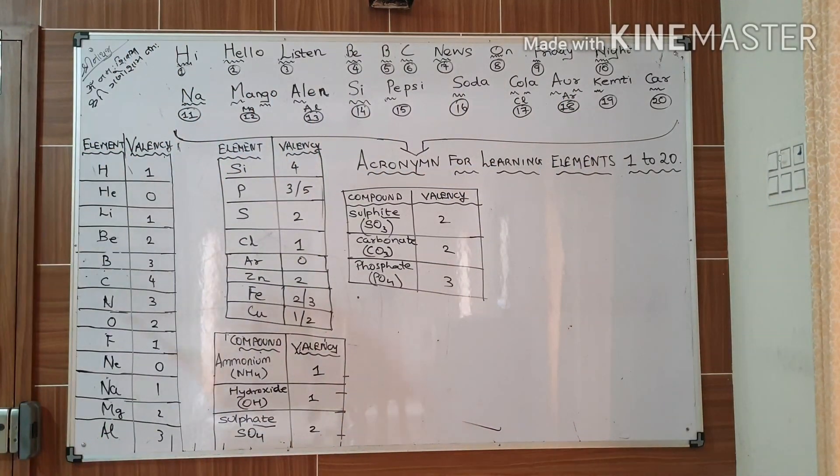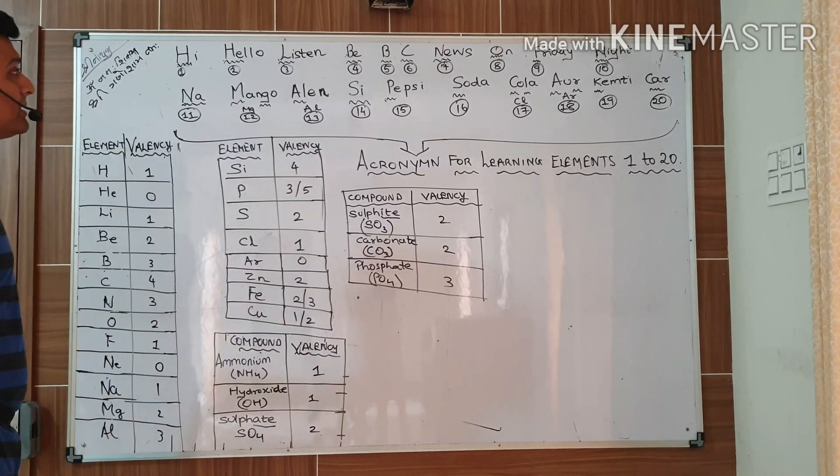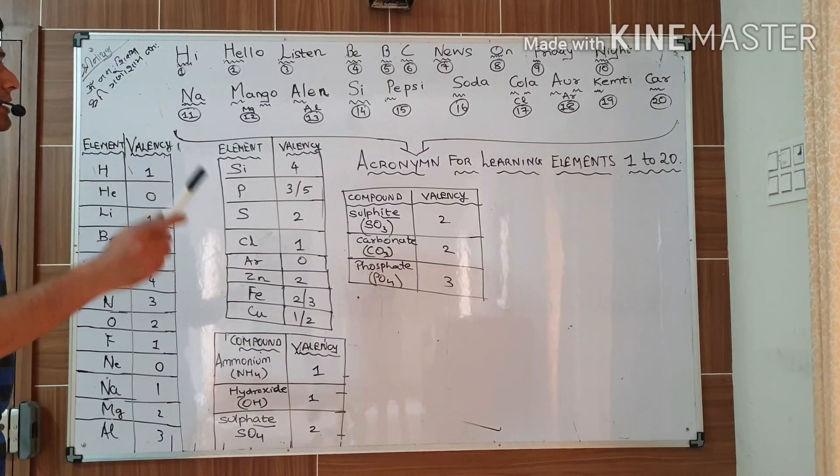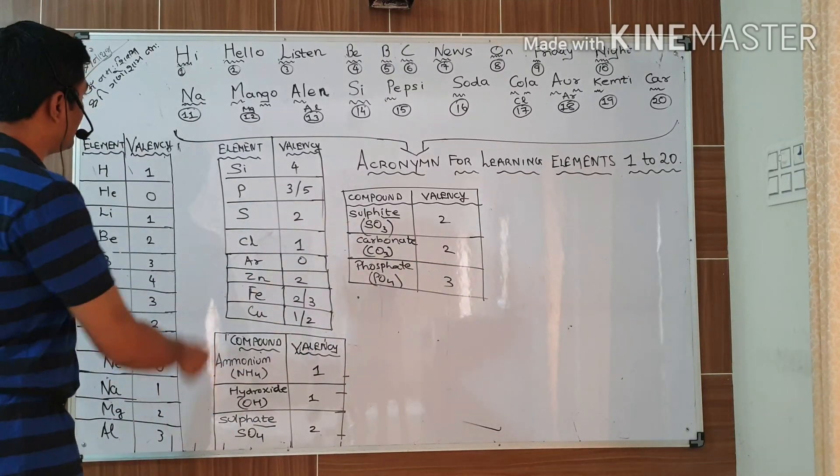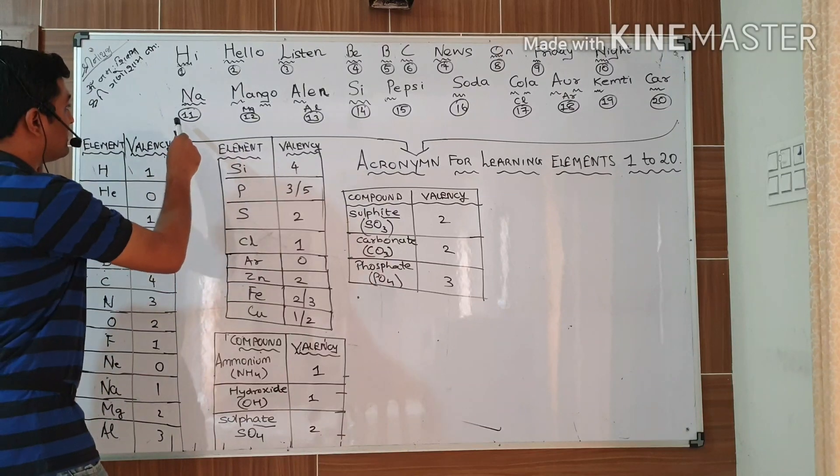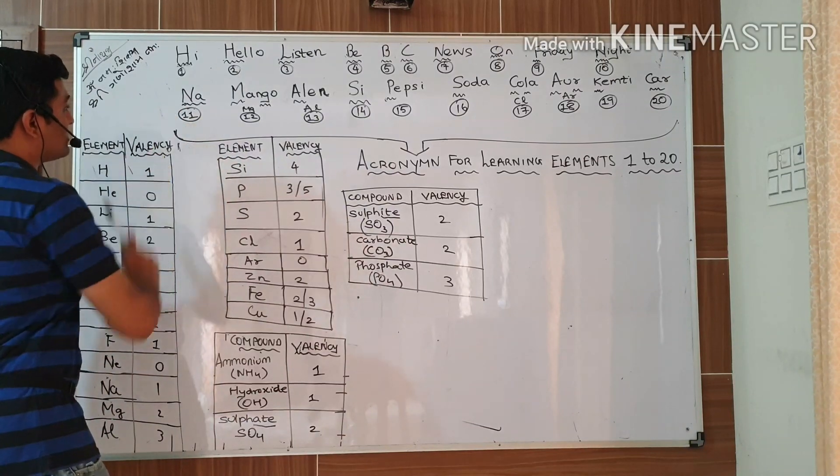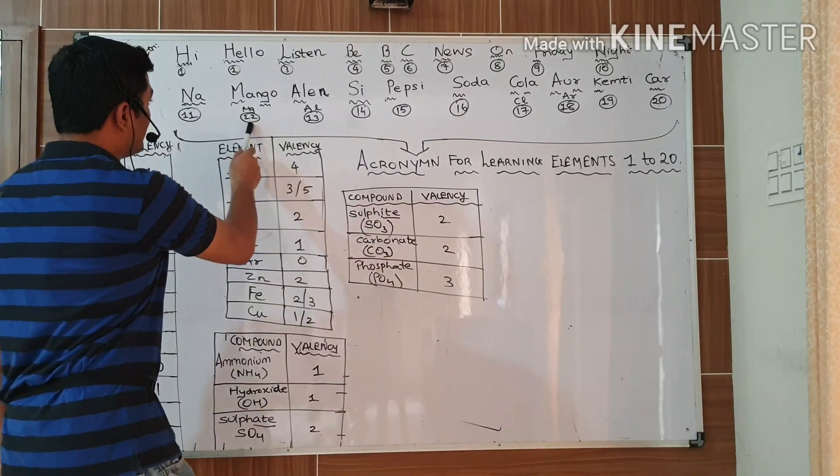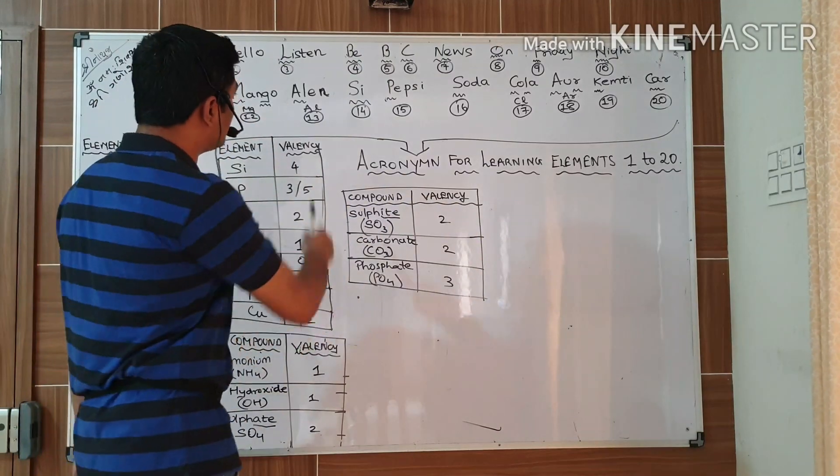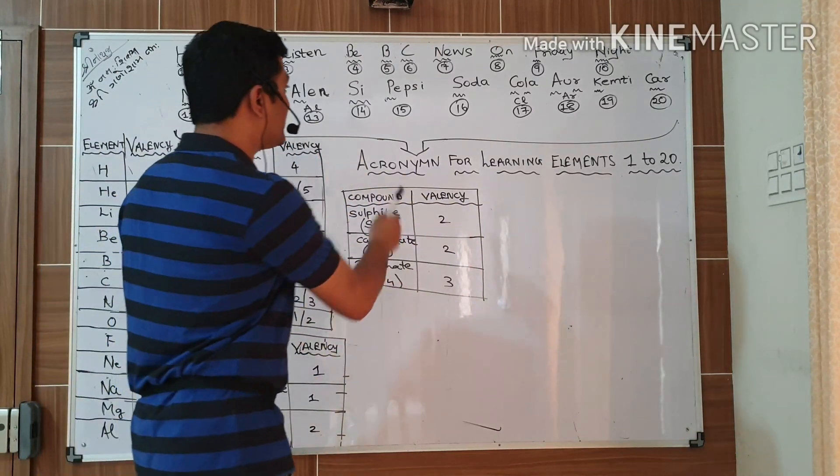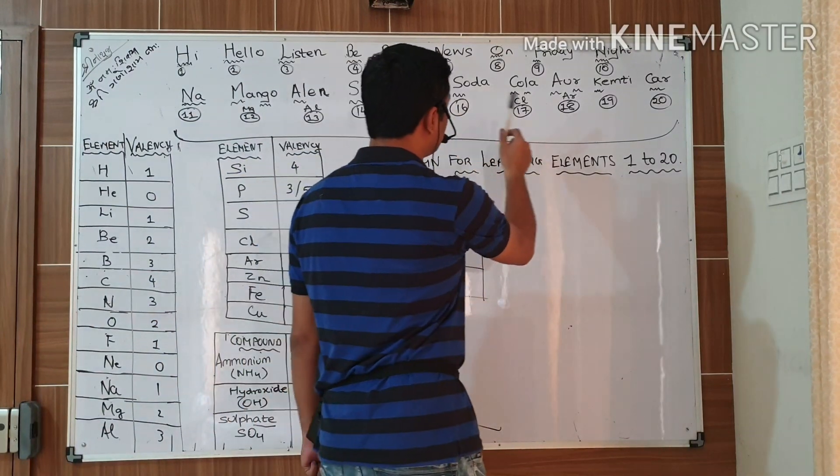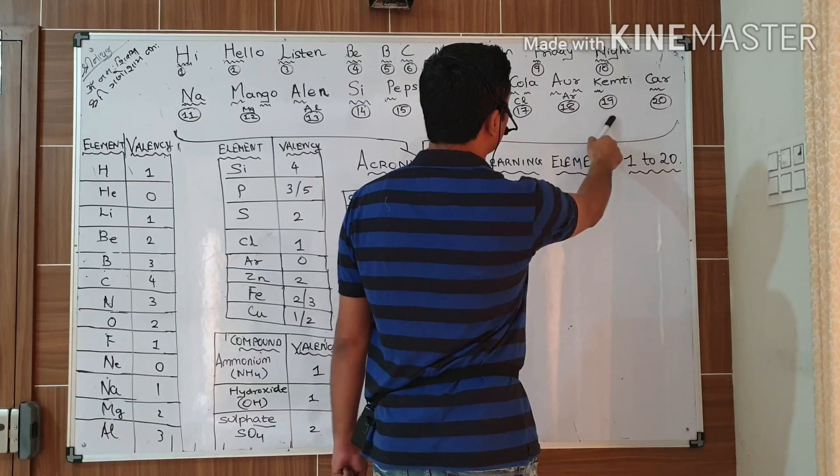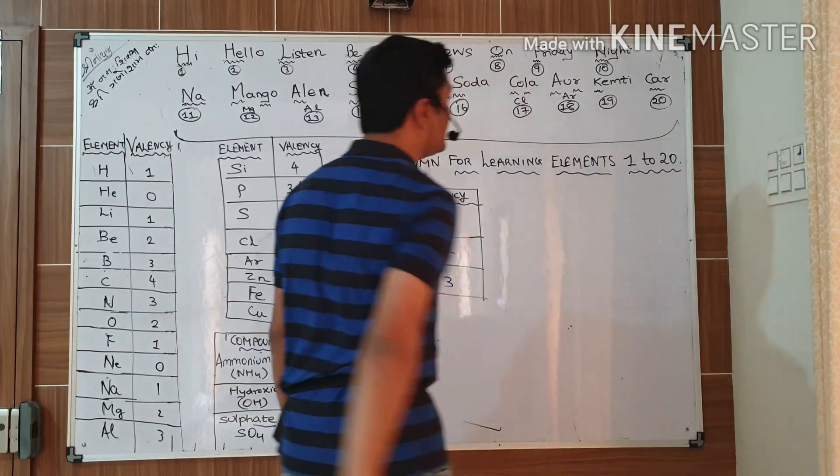Now coming to 11 atomic number. That is, now I am going to see Pepsi, Soda, Cola, or Keep the Car. This is the Hindi version. Concentrate on the capital letters. 11 number is sodium, 12 magnesium, 13 aluminium, 14 silicon, 15 phosphorus, 16 sulfur, 17 chlorine, 18 argon, 19 potassium, and 20 calcium.